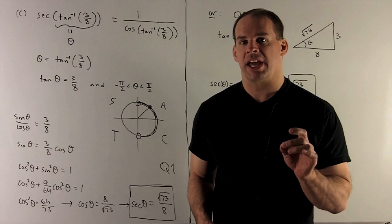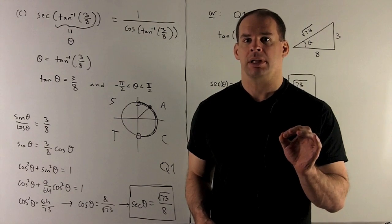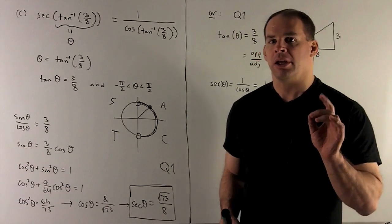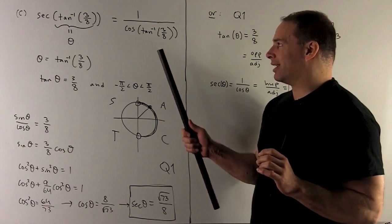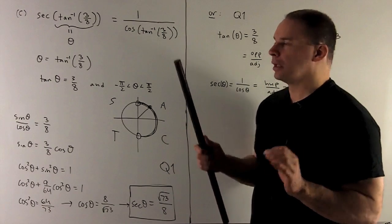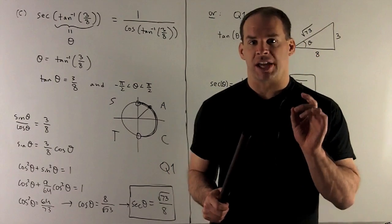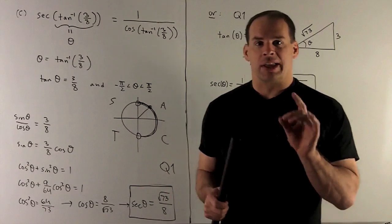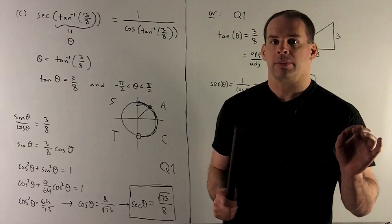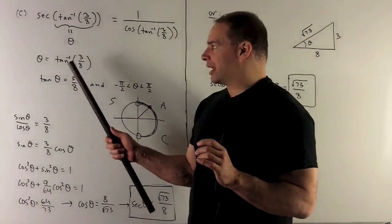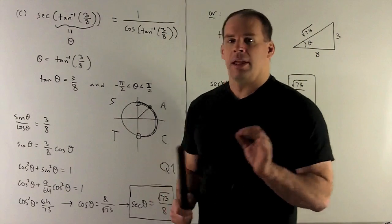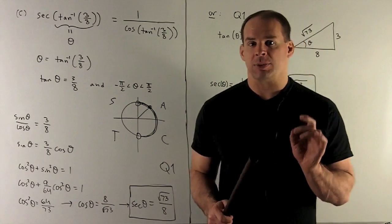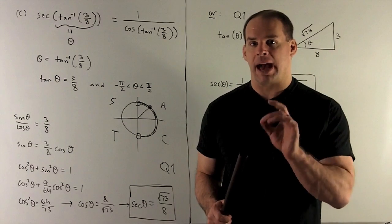Finally, secant of the inverse tangent of 3 eighths. Secant is just one over cosine, so we really want to find cosine of inverse tangent of 3 over 8. Let's deal with the inverse tangent first: call it theta, and use our language trick to rewrite. If theta equals inverse tangent of 3 over 8, that's the same as saying tan theta equals 3 over 8, and theta is between minus pi halves and pi halves.